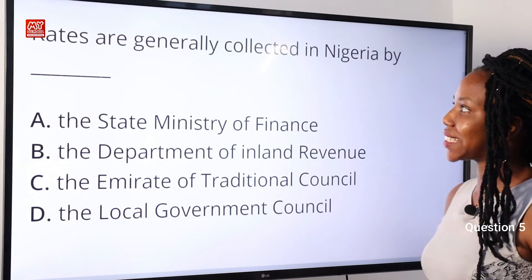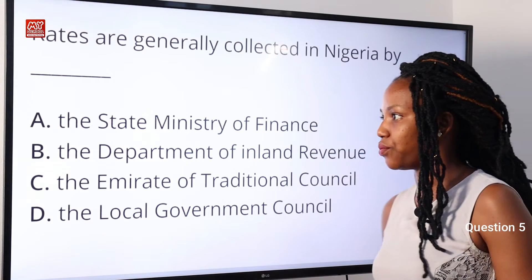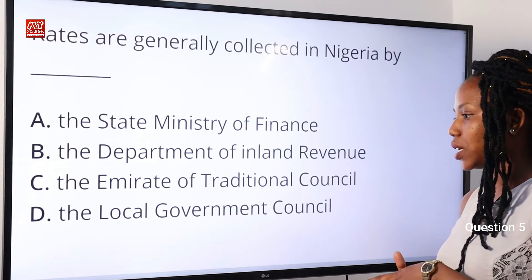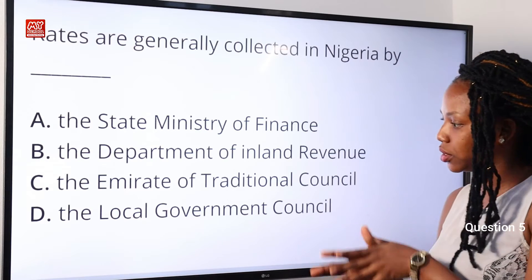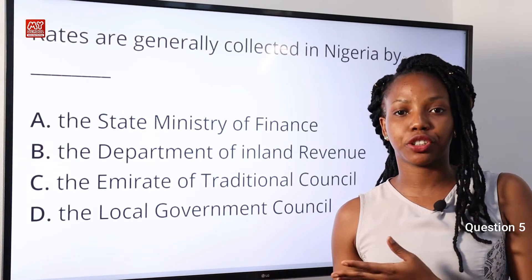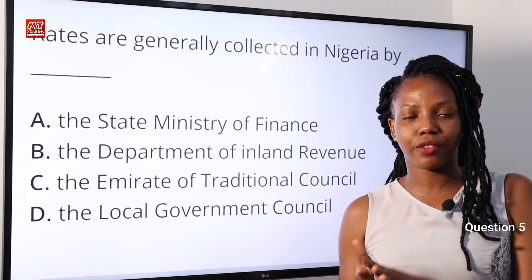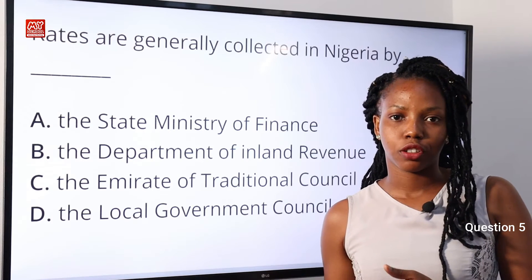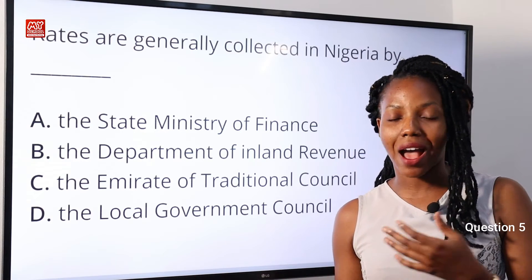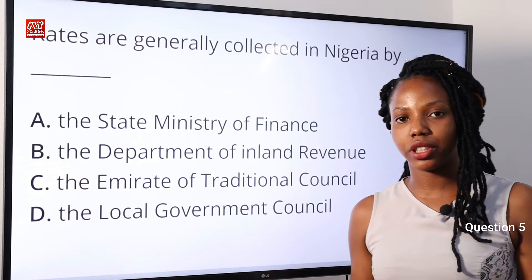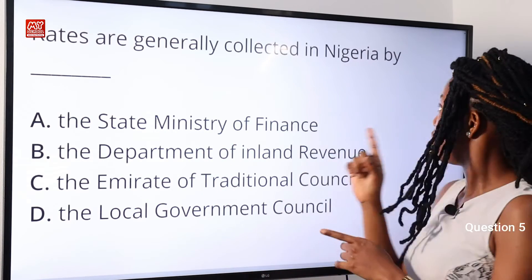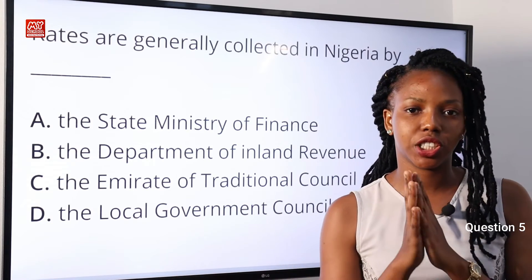Question 5: Rates are generally collected in Nigeria by — A: the State Ministry of Finance; B: the Department of Inland Revenue; C: the Emirates or Traditional Council; D: the Local Government Council. Local governments generate revenue through the collection of rates — charges levied on properties or buildings, such as motor parks, market shops, radios, and televisions. Option D is the correct answer.